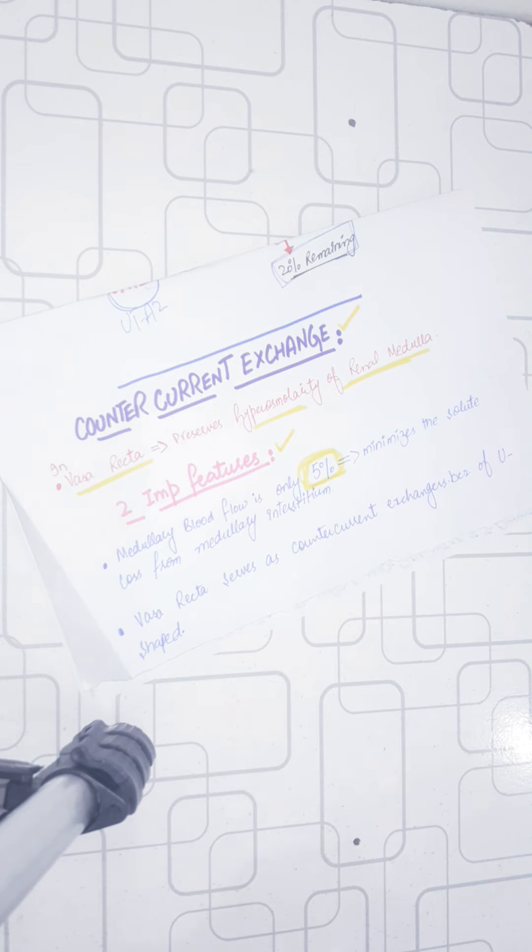Why is the medullary blood flow only 5%? Because if you have cells, they also need metabolic needs. So they need to fulfill their metabolic needs. We have to have 5% blood flow.